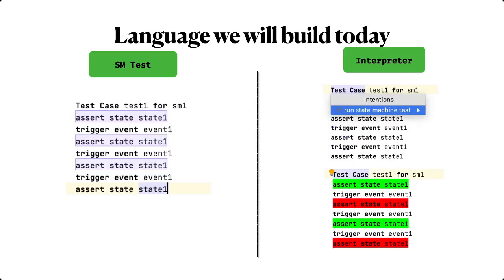The second language we'll implement is to show how interpreter tests work. We'll implement a test state machine language which is dependent on the state machine language itself. Every test case is for a particular state machine, and in each test case you can have two kinds of statements: the assert statement and the trigger statement. The assert statement allows you to assert whether your current state is, say, state one; then you trigger an event, and then you can check again whether triggering event one will take you to the expected state. We will implement an interpreter to evaluate whether each assert statement is in the right accepted state. That brings us to the end of the presentation part of our session today — we'll jump right into the demo.